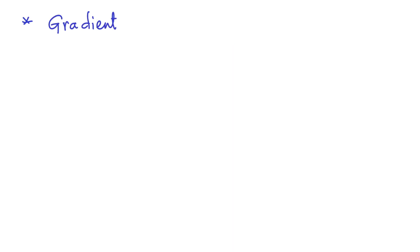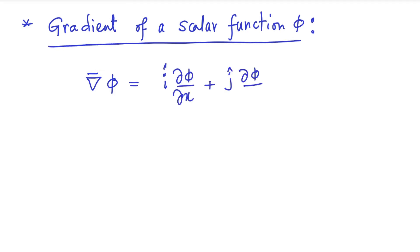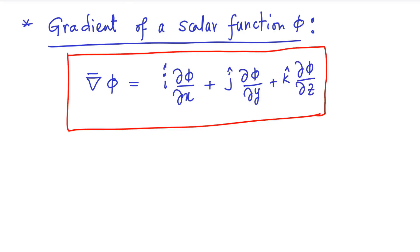Now let us define the gradient of a scalar function, say phi. The gradient of a scalar function phi can be expressed as grad phi equal to i-hat times del phi/del x plus j-hat times del phi/del y plus k-hat times del phi/del z, as you see it here.